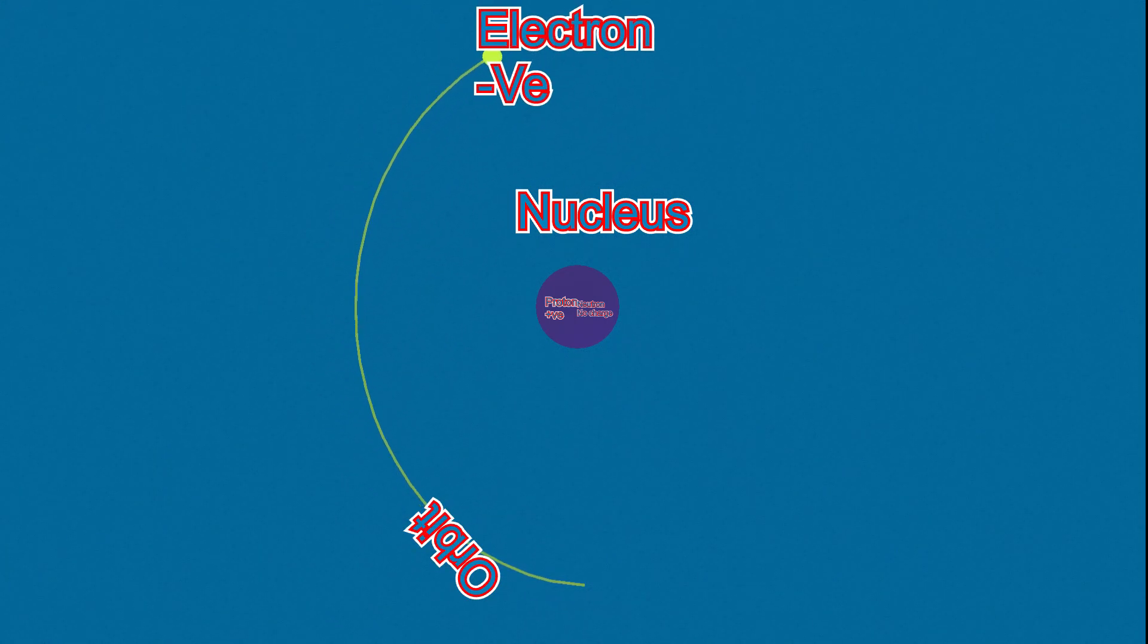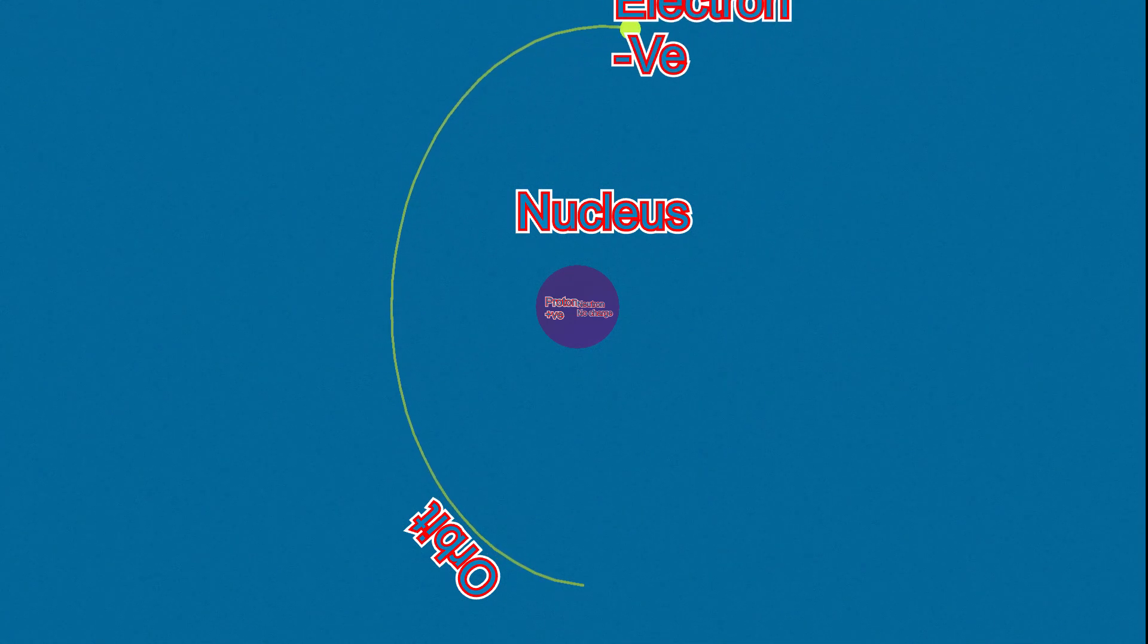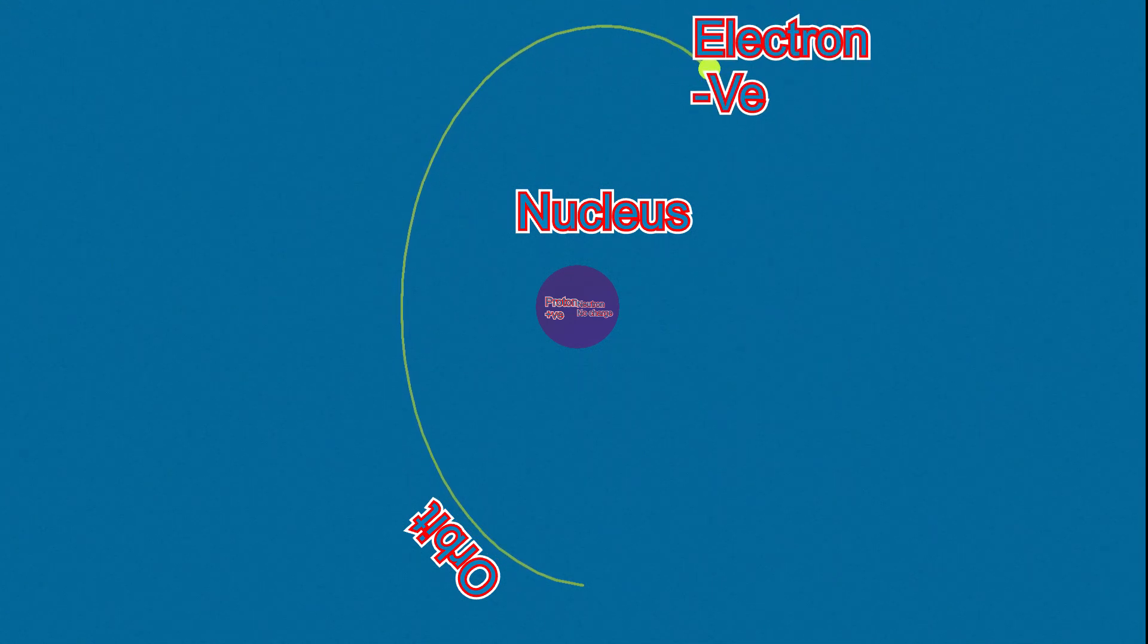One of the main key components of an atom is called electron. Electron is a negatively charged particle. Electron revolves around the nucleus in a certain path called the orbit. An orbit is also not a physical component inside an atom, but the concept to represent the path that electron follows while revolving around the nucleus.